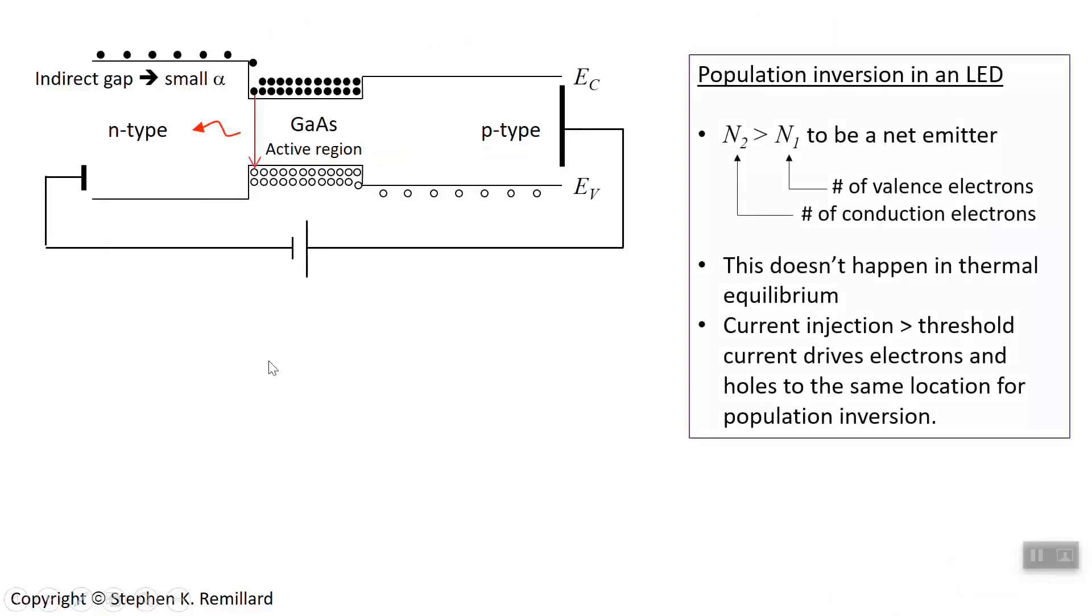Then the photon can travel down the gallium arsenide well and leave. The direction of the photon is into the screen. That's the basic idea of the commercially successful type of diode laser, the double heterojunction laser.